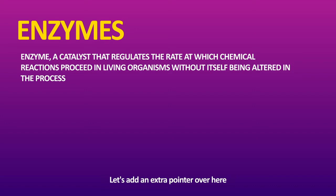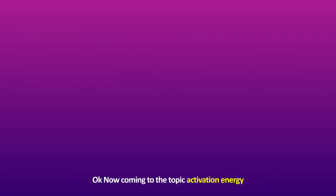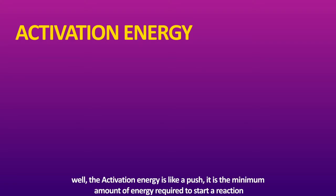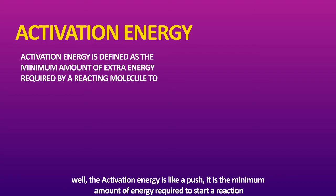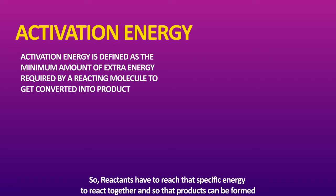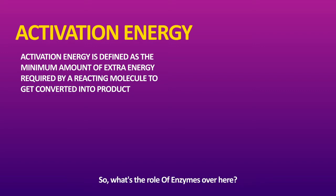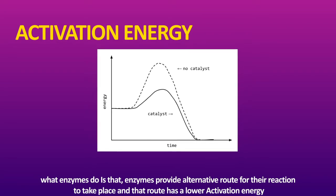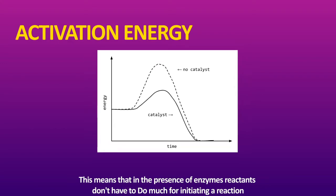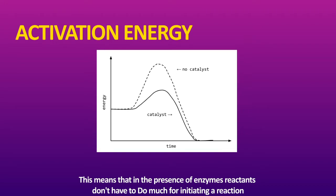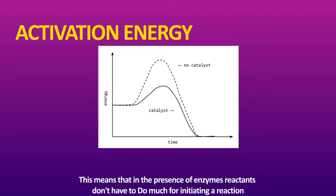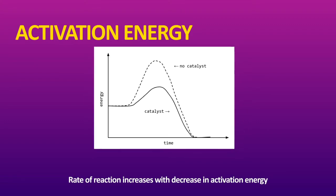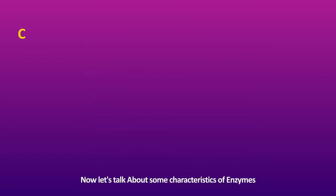The name 'enzyme' was given by Frederick Wilhelm in 1878. Now, coming to the topic of activation energy. Activation energy is like a push — it's the minimum amount of energy required to start a reaction. Reactants have to reach that specific energy to react together so that products can be formed. What enzymes do is provide an alternative route for the reaction to take place, and that route has a lower activation energy. The rate of reaction increases if your activation energy decreases.